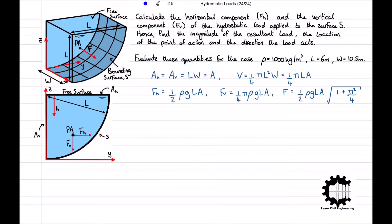Finding the location of the point of action PA: by intuition the x coordinate XP equals one half W, since the liquid has uniform width W and is located along the vertical centerline. For the y coordinate, the point of action is at the centroid of the cross-sectional area of the water, which is where FV acts. The centroid of a quarter circle is located at 4 over 3 pi times the radius, so YP equals 4 over 3 pi times L.